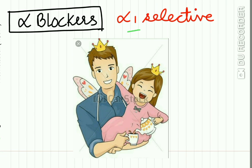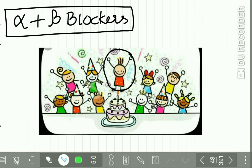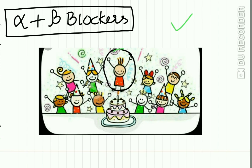The alpha blockers are alpha-1 selective drugs, covered in detail in the anti-adrenergic chapter — find the link in the description box. The mnemonic 'Daddy Please Try Alpha T' helps recall prazosin, terazosin, and doxazosin.